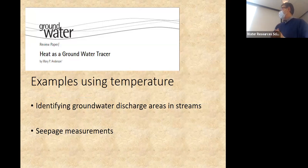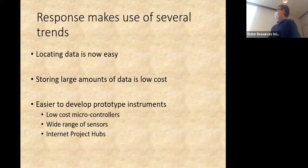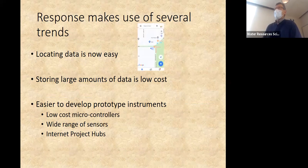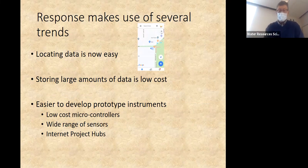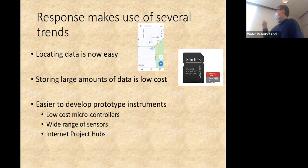I'm going to give some examples of using temperature — looking at groundwater discharge areas in streams and seepage measurements, basic data that any groundwater model needs. We're also making use of several trends from the last 10 years or so. Locating data is now easy: if I pull out my phone, I know where I am. Twenty years ago doing geophysics in a field, I'd mark a quad topographic map — that was the best I could do.